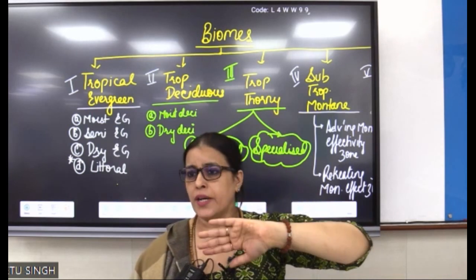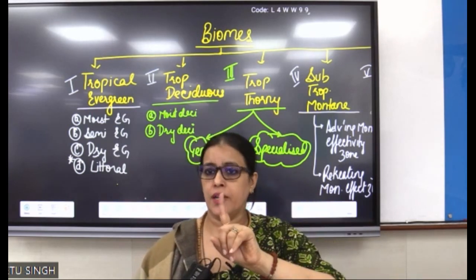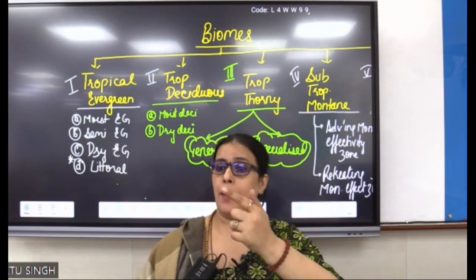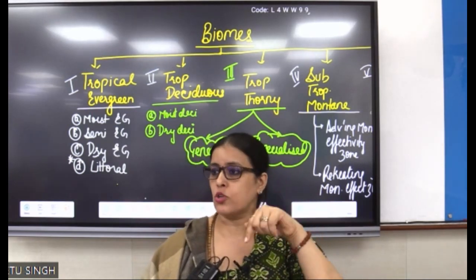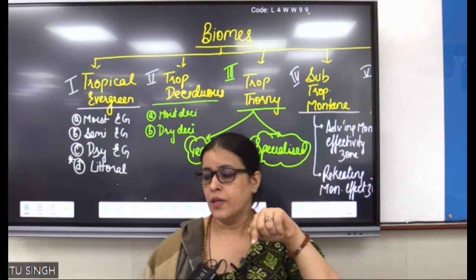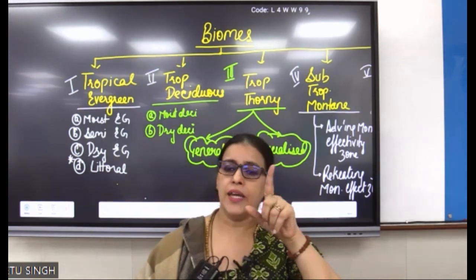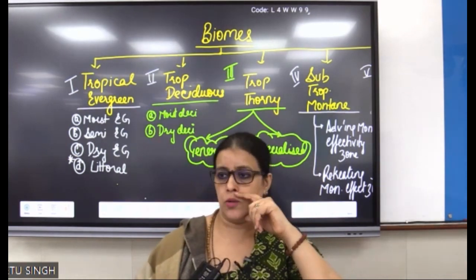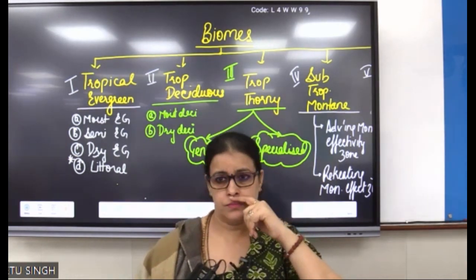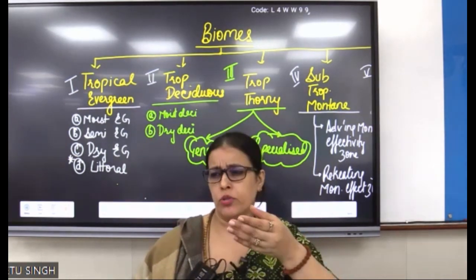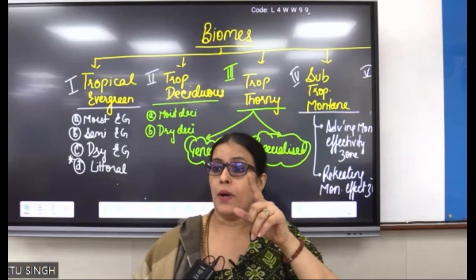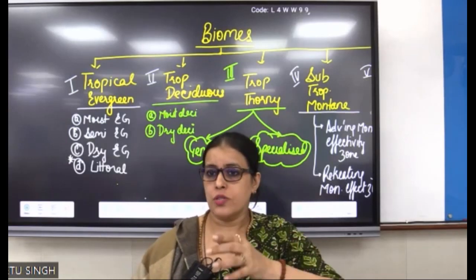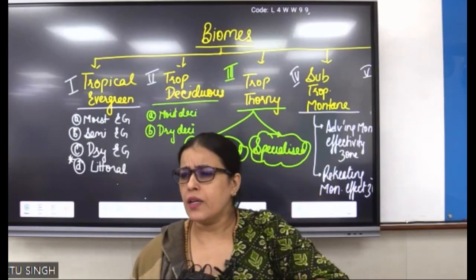Are you getting it? It is evergreen, but a little drier than Malabar and the northeastern block. And where will you put Dry Evergreen? As told a little while ago — Coromandel Coast. Dry — why? Let's think.